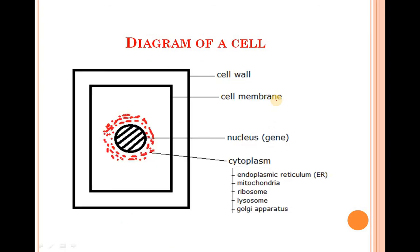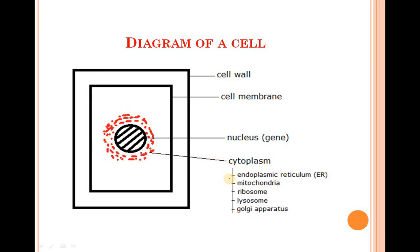Now the cell diagram that you can use in your exam. The outermost layer is the cell wall, then inside it is the cell membrane. In the middle of the cell is the nucleus, which contains genes. The jelly-like substance around the nucleus is the cytoplasm, which contains the endoplasmic reticulum, mitochondria, ribosomes, lysosomes, and Golgi apparatus. These were difficult to remember, so an acronym was made to help memorize them.